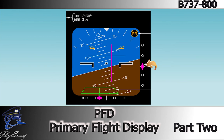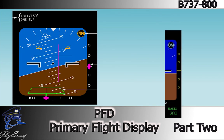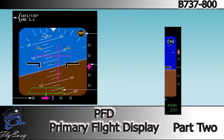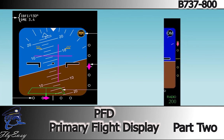The pointer fills in solid when it's within two and a half dots from the center of the scale. At low radio altitudes with the Autopilot or Flight Director engaged, the scale turns amber and the pointer flashes to indicate excessive glide slope deviation.